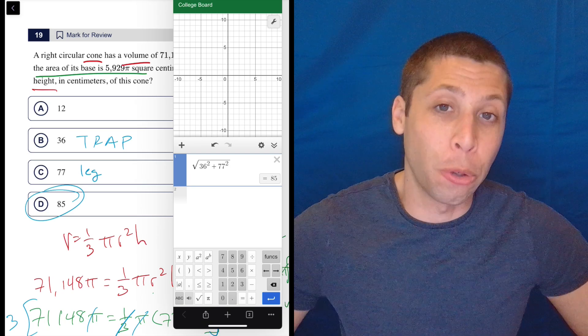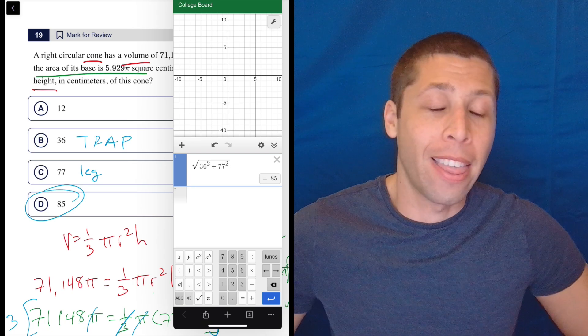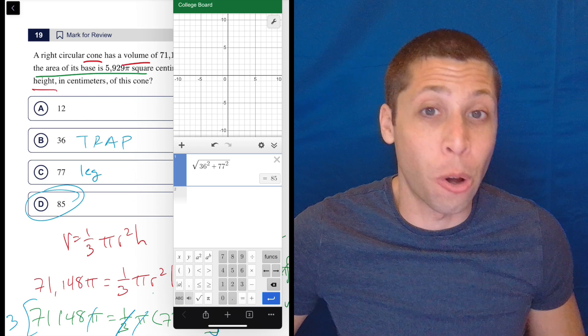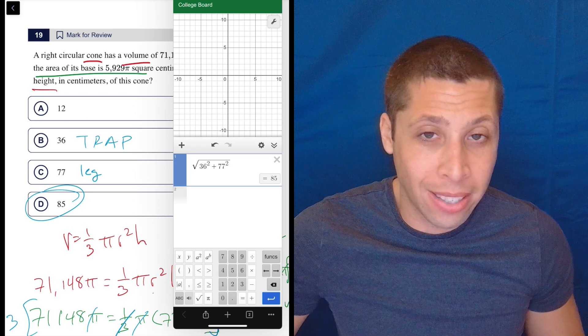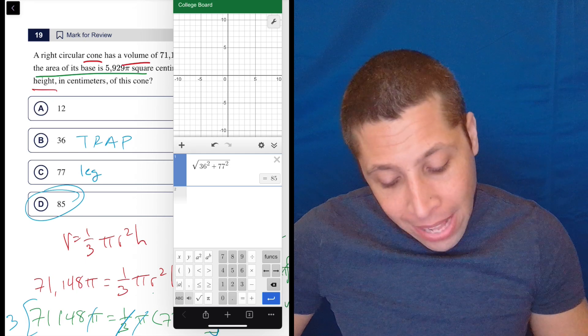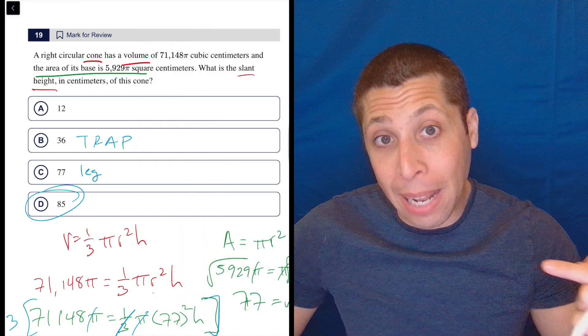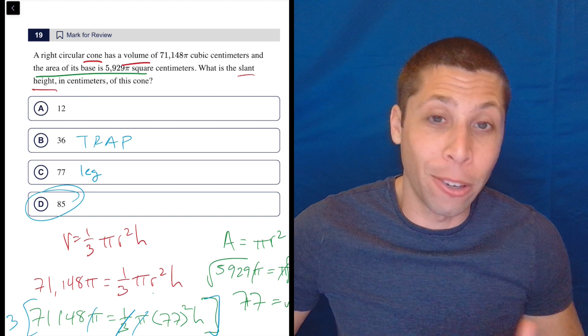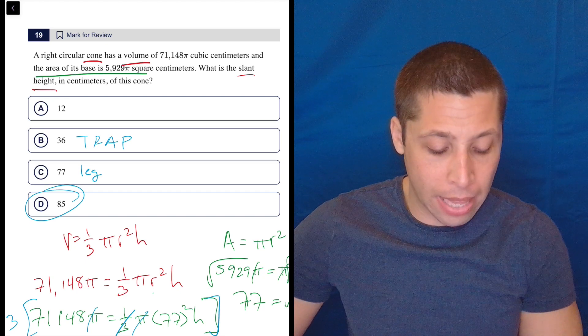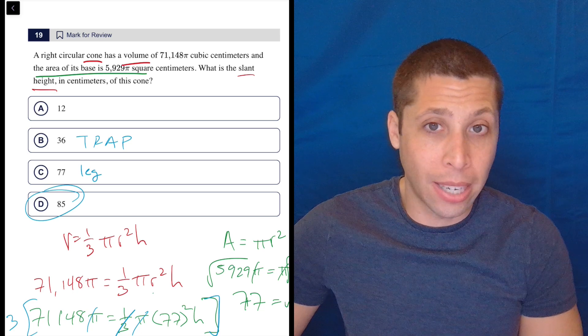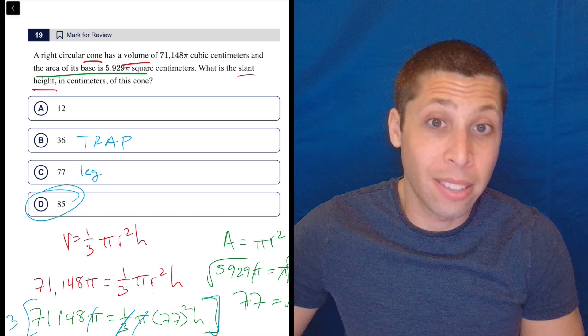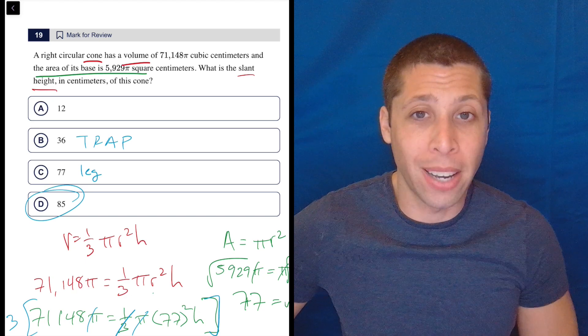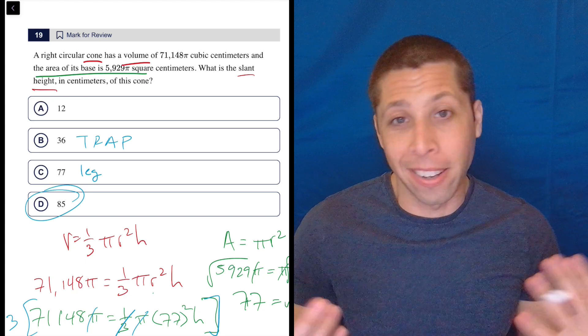But if it was a student-produced response question, we had to type it in, then we would need to know how to do the Pythagorean theorem. And that's not that surprising. Right triangles make an appearance in all sorts of geometry questions. So it's usually a good way to go. But that slant height thing, if that's the reason you got it wrong and you didn't know what that meant, then that sucks. But now you do and you won't get it wrong again. It's not common that the SAT asks about that. But also just remember things like cones, spheres, cylinders, all these formulas are given to you on the reference chart. So you don't have to memorize that. You just need to memorize that the reference chart exists. And there you go.